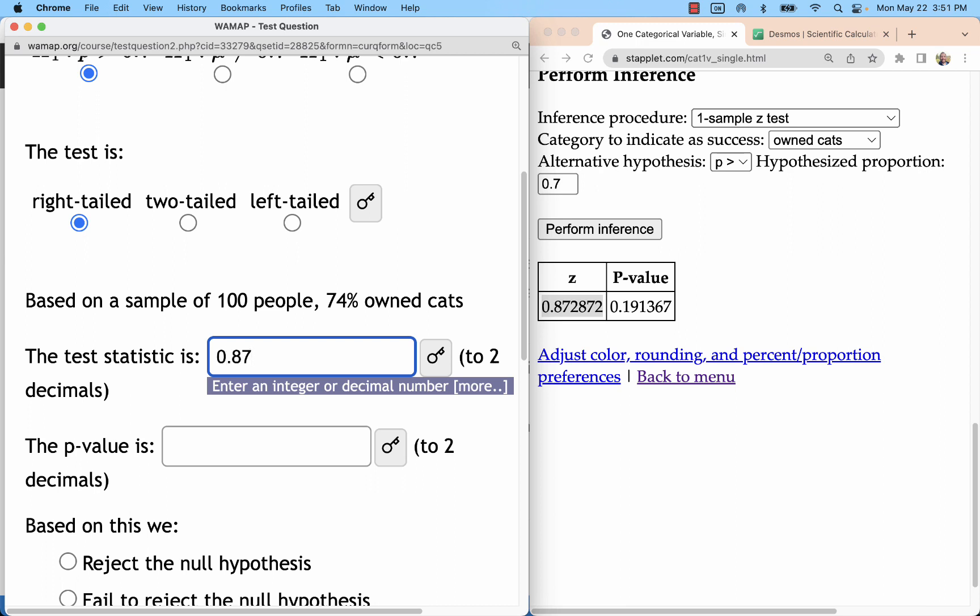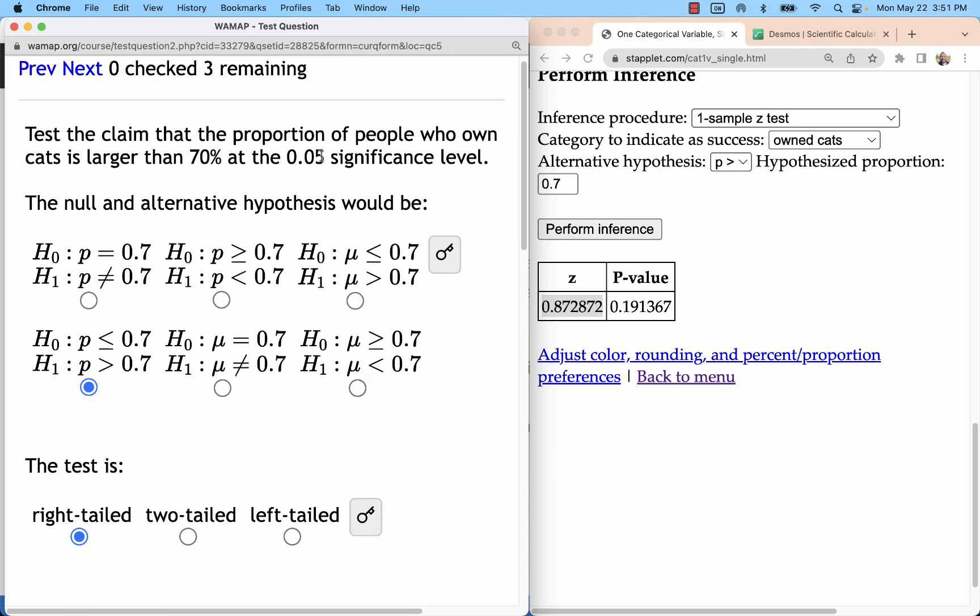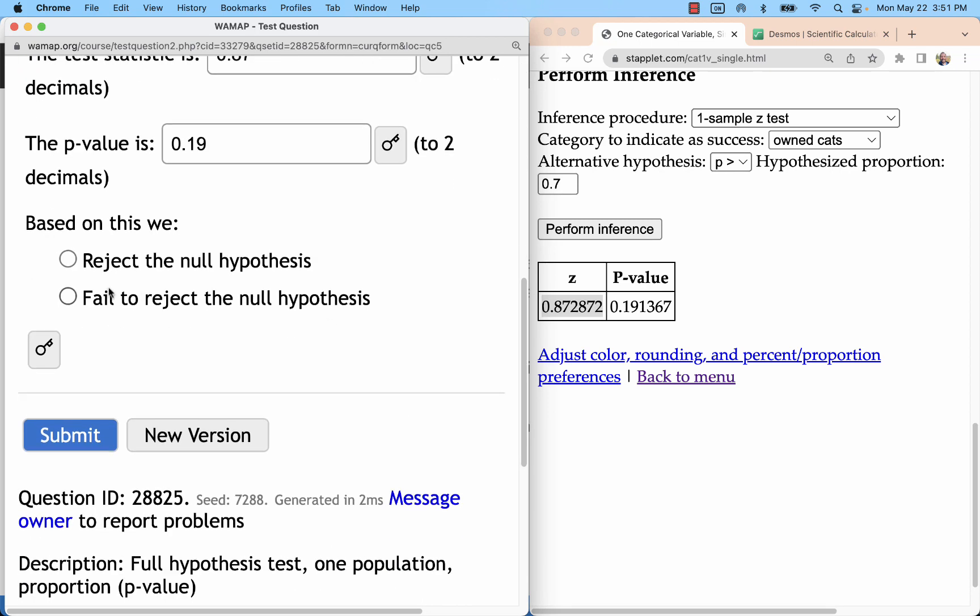And this is only asking for two decimals. So, that's 0.87. The p-value of 0.19, which is definitely bigger than alpha. We'll just double check. Alpha is 0.05. That's definitely bigger.